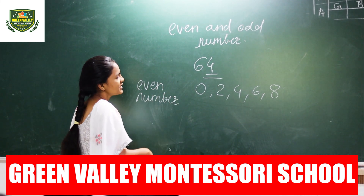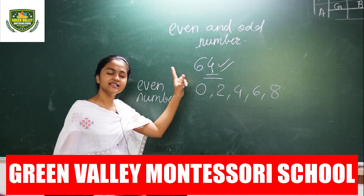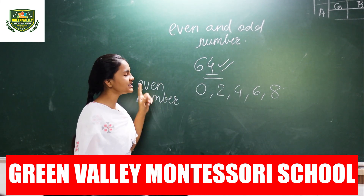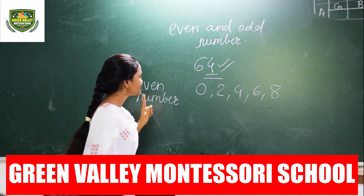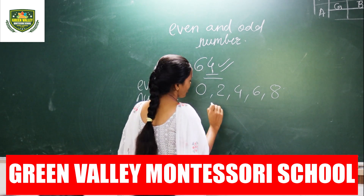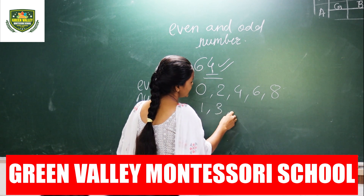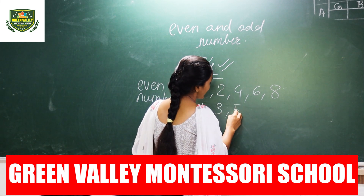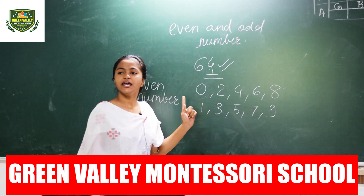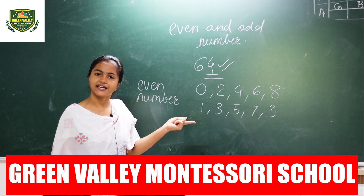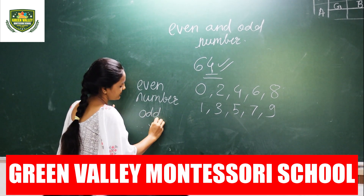Here the one's place digit is 4, so 64 is an even number. And if on the one's place 1, 3, 5, 7, or 9 is there, then it is called an odd number.